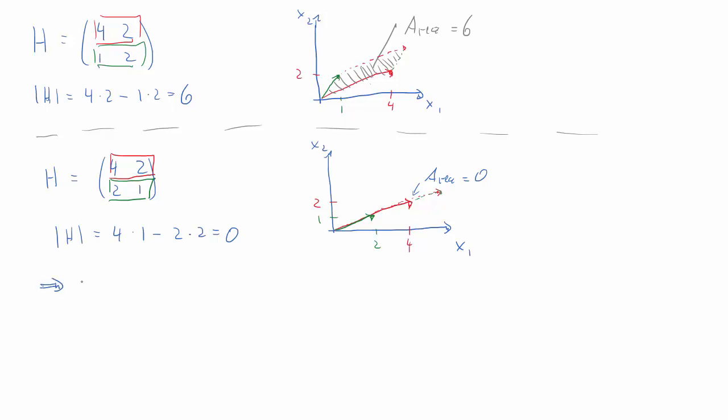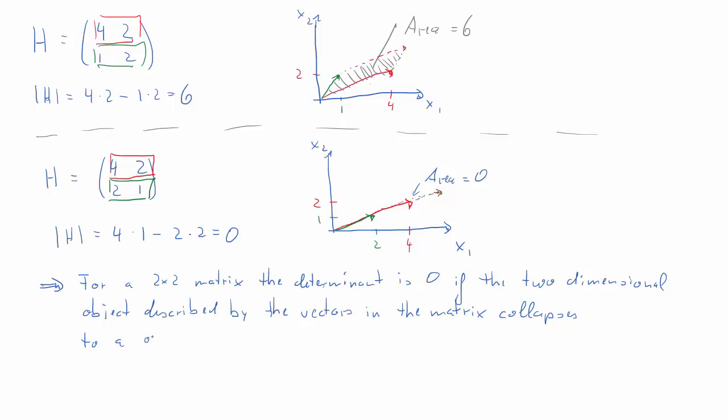So this example, in some sense extreme example, gives us very important insight. So we'll first formulate it for the specific 2x2 case we were looking at. And for a 2x2 matrix, the determinant of that matrix is 0 if the two-dimensional object that is described by the vectors in that matrix collapses to a one-dimensional object. So we're going from 2 to 1 dimension. Potentially we have a two-dimensional object, but the two vectors happen to be such that the object ends up being a one-dimensional object.